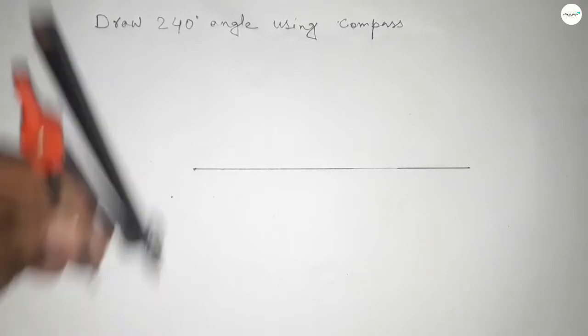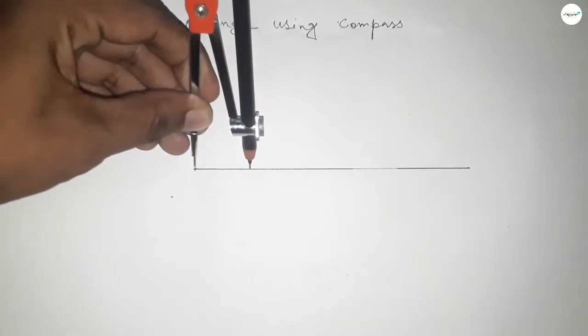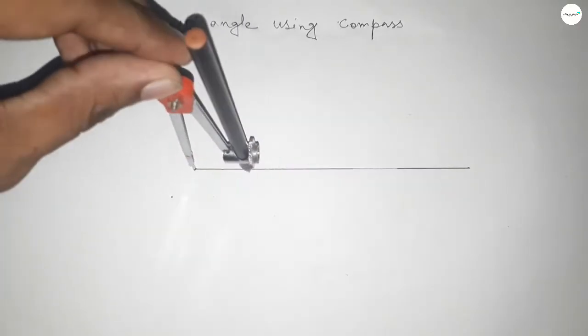Now putting the compass on the point and taking any radius and now drawing an arc.